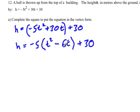And if you remember, the basic steps are you divide this number by 2 and then square it. So negative 6 divided by 2 is negative 3, and negative 3 squared is positive 9.